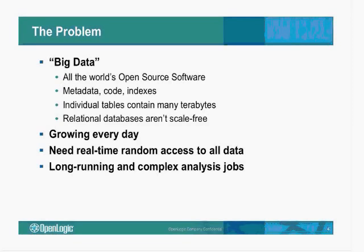We need real-time access to all this data because people can go into our SaaS environment, do scans, query, look for open source projects for individual lines of code or particular files, and research metadata around projects to see which ones can solve their problems and get support. So we need instantaneous access through a web application — you can't wait minutes or even seconds for your data. On the other hand, we also have long-running and complex analysis and batch jobs crawling over all this data looking for relationships and dependencies, analyzing what we have to slice, dice, report on it, and have business intelligence around it. Those are pretty tough and different requirements to put on one system.